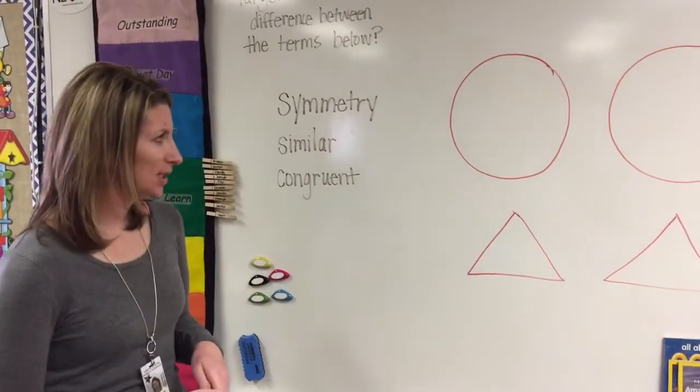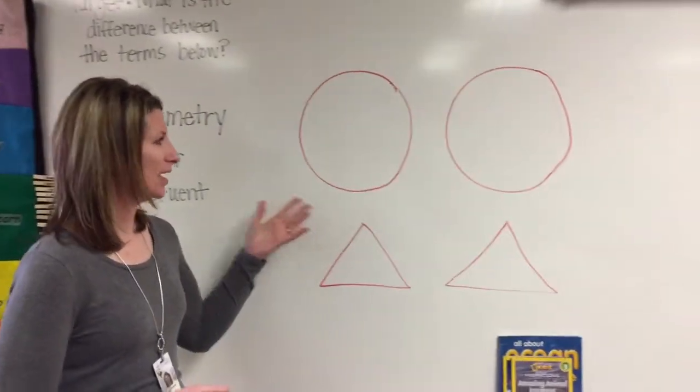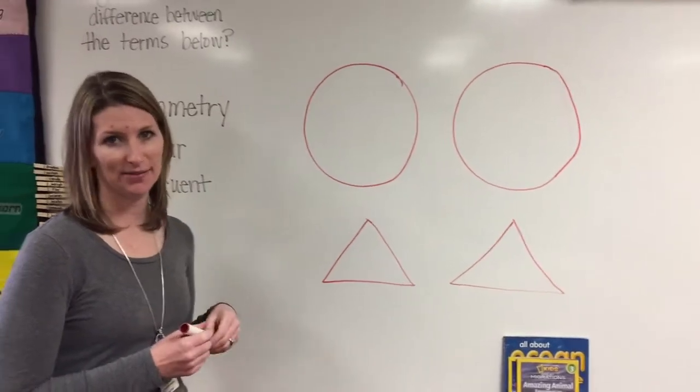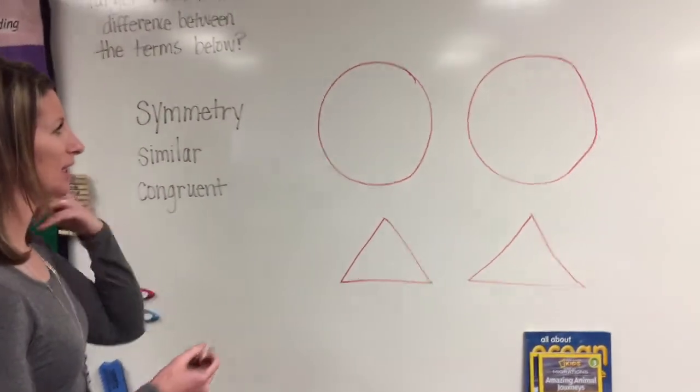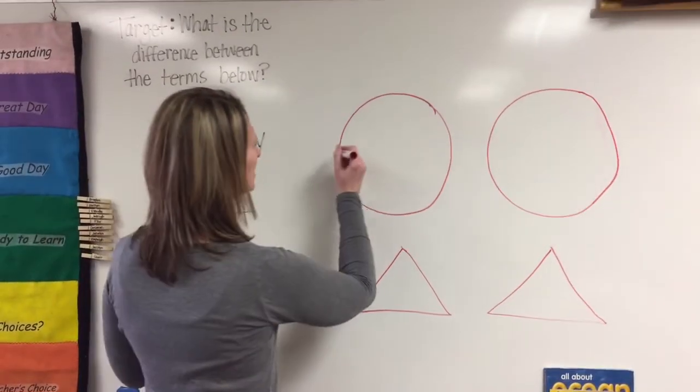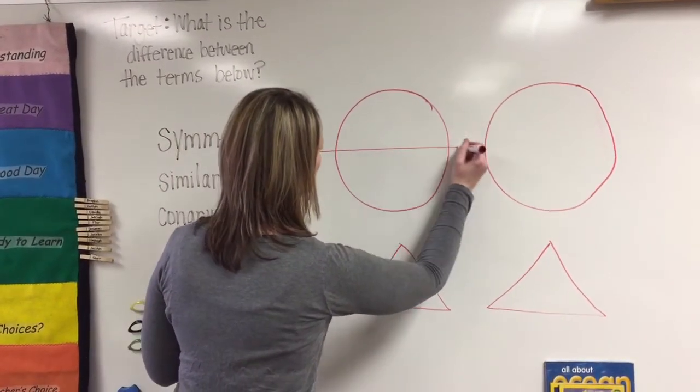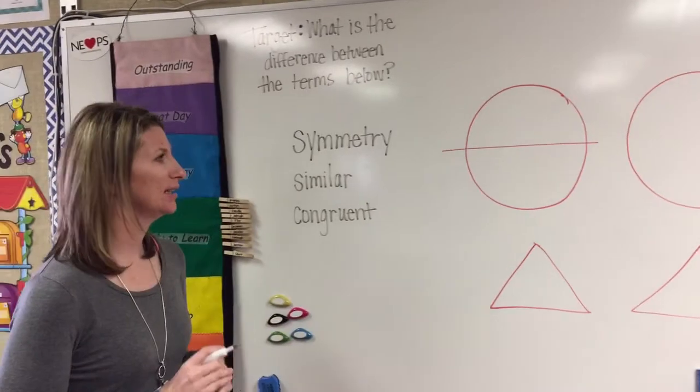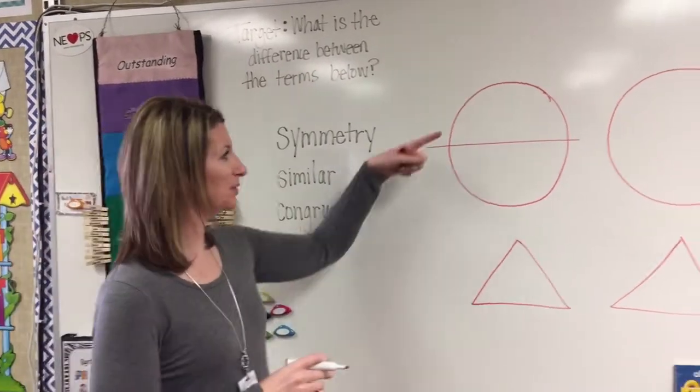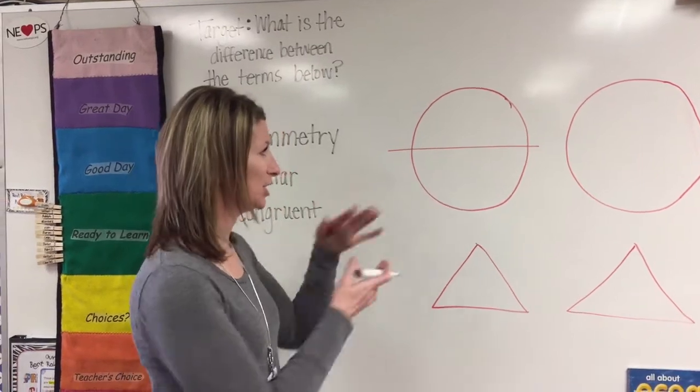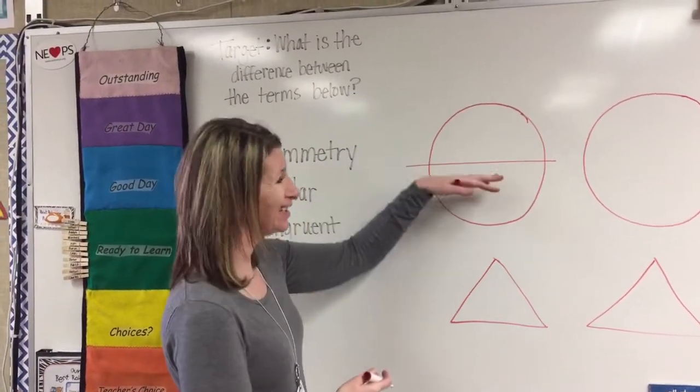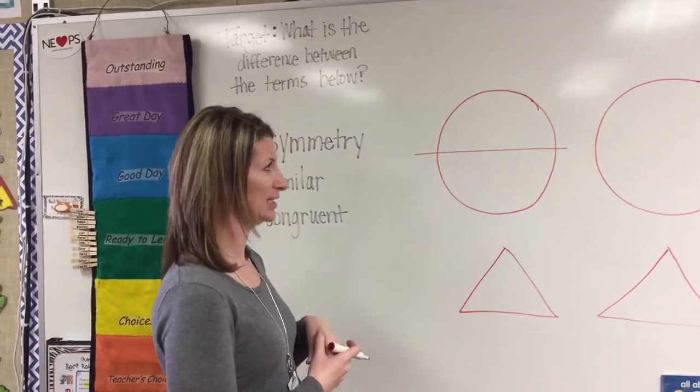So I have some shapes here. I have a couple circles and I'm gonna show you now what a line of symmetry is. If I draw a line, let's say right across the middle of this circle, that would be a line of symmetry because both my top and my bottom are exactly the same. Same size, same shape. If I fold it over or cut it on the line of symmetry, it would be the exact same.